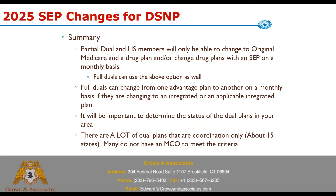In summary: partial dual and LIS members will only be able to change to original Medicare and a drug plan, or change drug plans, with the new monthly SEPs. Full duals can use that option as well, but full duals have another option — they can change from one advantage plan to another on a monthly basis if changing to an integrated or applicable integrated plan. It's going to be important to determine the status of the plan with the carrier. Many dual plans are coordination-only, and coordination-only or integrated-only plans are not eligible to use this new election for full duals.